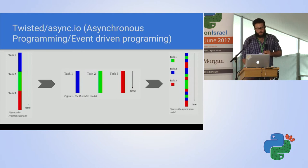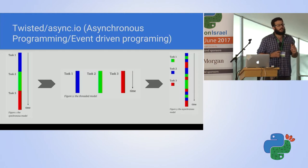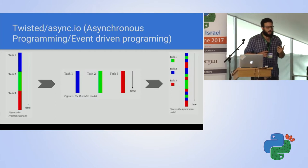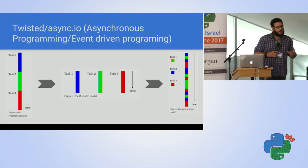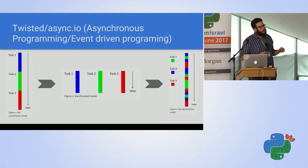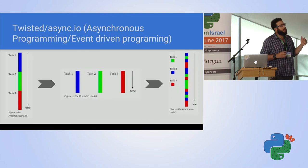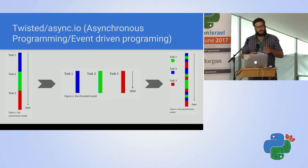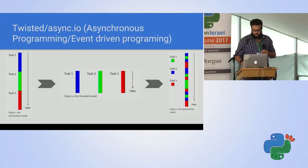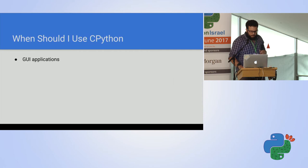Event-driven programming is a tough model. It's tough to understand, and Python isn't really written for this - you need to write code entirely differently. It has a very high learning curve. There is a blog called Curio which explains a bit about this and about Twisted if anyone wants to dive more into it.